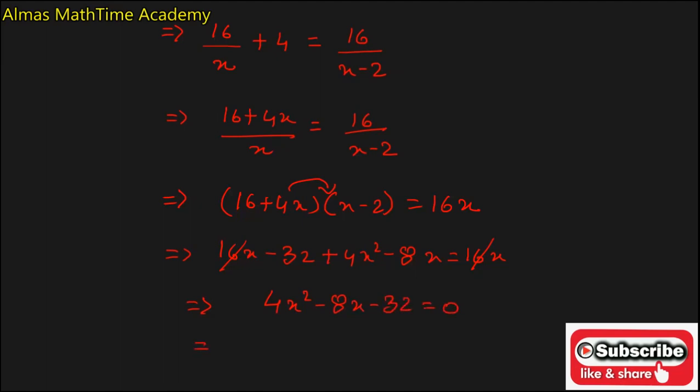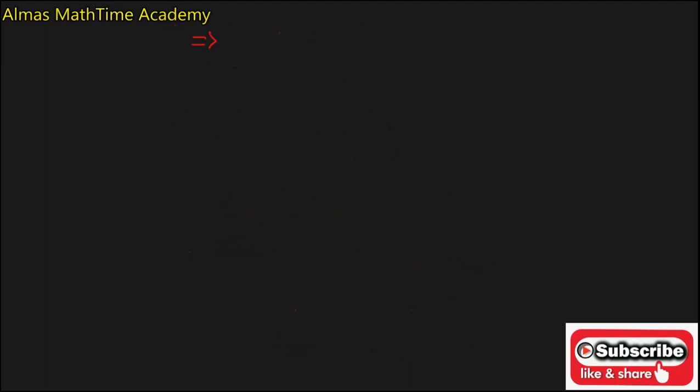Now again after simplification this can be written as x square minus 2x minus 8 is equal to 0. Now solving this quadratic equation will be getting the answer as x plus 2 into x minus 4 is equal to 0.